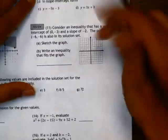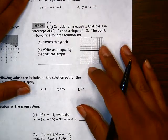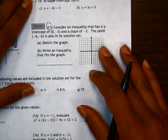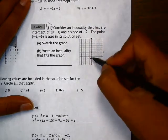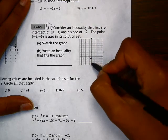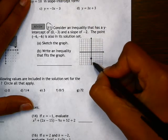All right, also looking at number 11. This is another inequality problem. Consider an inequality that has a y-intercept at 0, negative 3, and a slope of negative 2. So I'm going to go negative 2 and then over positive 1.